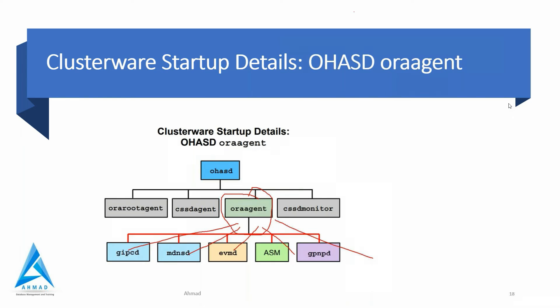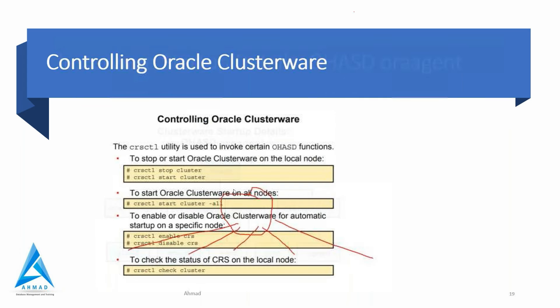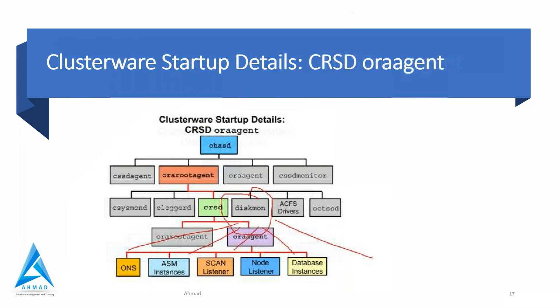Evmd - Event Management Daemon - is a background process that publishes events between the nodes, specifically events that Oracle Clusterware creates. ASM provides disk management for Oracle Clusterware and Oracle databases. Gpnpd - Grid Plug and Play Daemon - provides access to the Grid Plug and Play profile and coordinates updates to the profile between the nodes of the cluster to ensure all nodes have the most recent profile. This is the clusterware startup sequence.